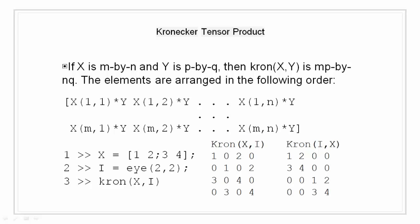So if X is an M by N matrix and Y is a P by Q matrix, then kron(X, Y) is an MP by NQ matrix. The elements are arranged such that the first element of X is multiplied by Y, then the second element of X is multiplied by Y, and so on. In simple terms, the Kronecker tensor product of X and Y means that each element of X gets multiplied by Y as a scalar and the resultant matrix is formed.